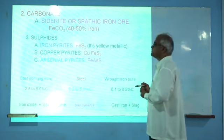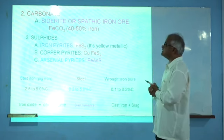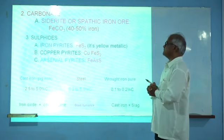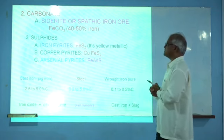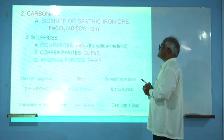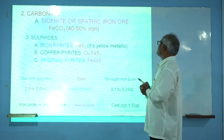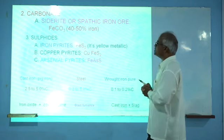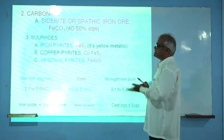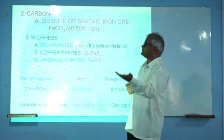Iron content in carbonate form is near about 40%, and it is not easily separated. The third is the sulphide content of iron, which can occur in three different rocks: one is iron pyrite (FeS₂), which is the yellow metallic rock; second is copper pyrite (CuFeS₂); and third is arsenical pyrite. The occurrence is in three forms: oxide, carbonate, and sulphide.